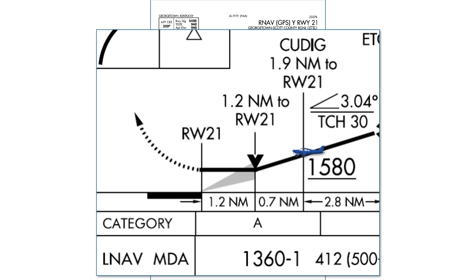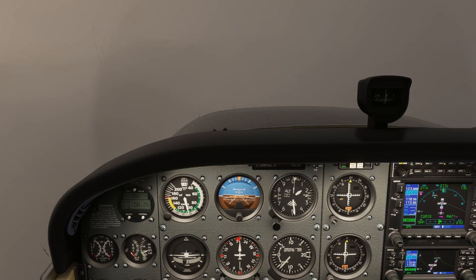Here's an interesting rub you see on a lot of non-precision approaches. The VDP is at 1.2 miles, but the visibility requirement is only one mile. It's possible, then, to arrive at the VDP, not gain sight of the runway, continue along at the MDA, gain sight of the runway, and then proceed to land — all legally.